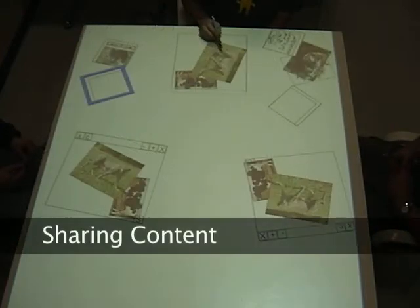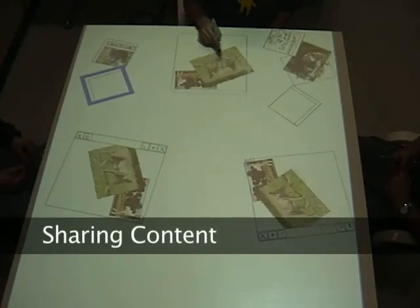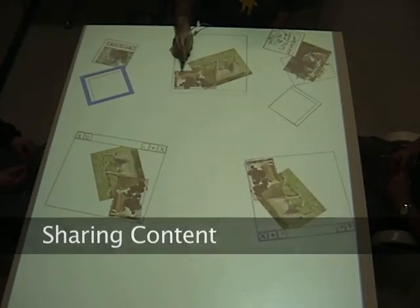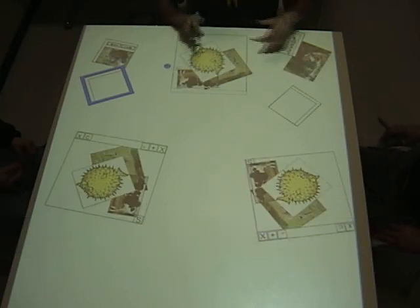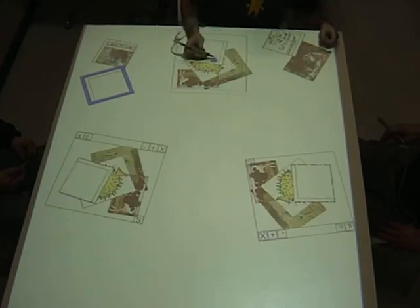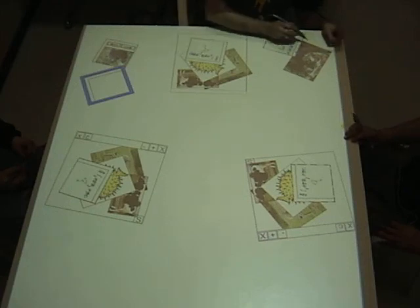Several people can create views of the same reference area and the reference area can then be used to share content with members of the group. Here, people are trying to devise a storyboard using images and freehand drawings. The person sitting at the end of the table places a series of images in the reference area and proposes a story to other group members. The other users watch his actions in their local views.